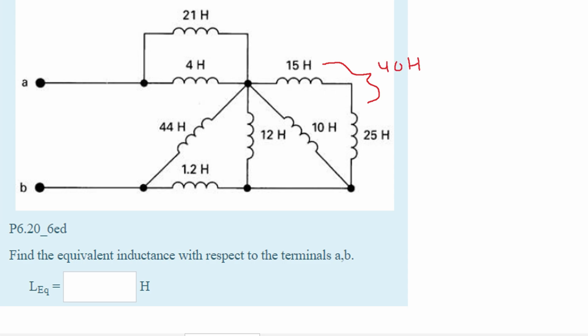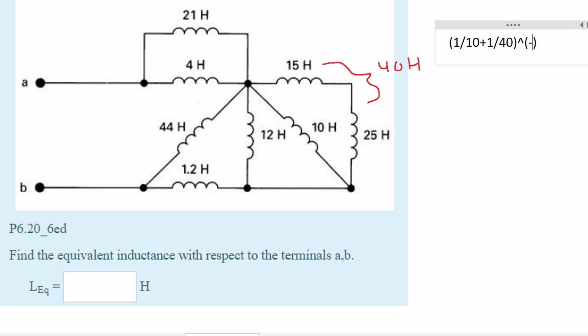Now we can see that if we run some current through here, some of it is going to split one way and some is going to go the other way. That means our 40 Henry inductor is in parallel with our 10 Henry inductor. Plugging this into the formula for inductors in parallel, we get 8 Henrys.